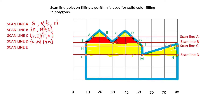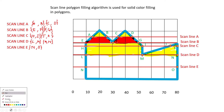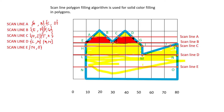Once we've passed point m, the next scanline — scanline E — has only two intersection points: n and o. We make a pair of them and fill in the color. As you can see, we have now completely filled this polygon using the scanline polygon fill algorithm. The key concept is how we make pairs and count intersections once or twice depending on whether the connected edges are on the same or opposite side of the vertex.